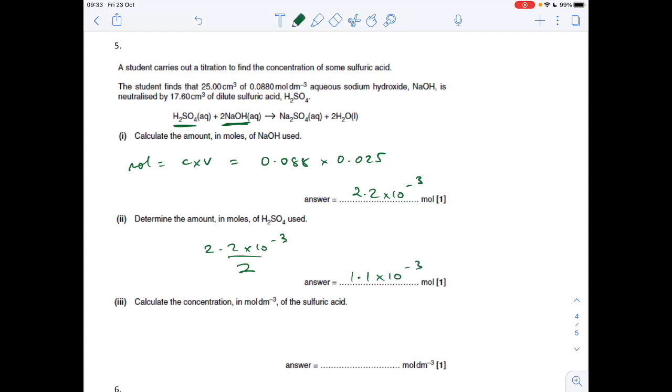And finally, the concentration of the sulphuric acid is going to be the moles divided by the volume. So C is moles over volume. Remember that volume's got to be in dm cubed. So the moles were 1.1 times 10 to the minus 3. The volume of sulphuric acid was 17.6 cm cubed, which is 0.0176 decimeters cubed. And that's 0.0625.